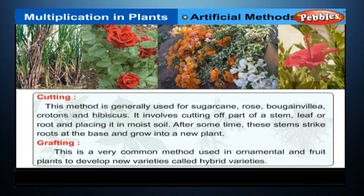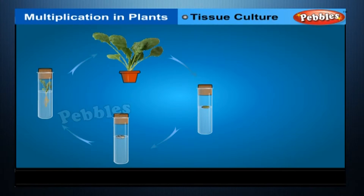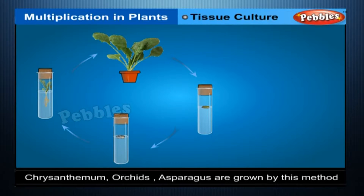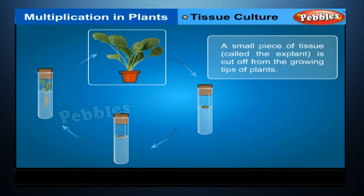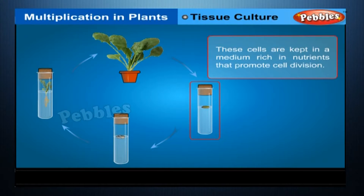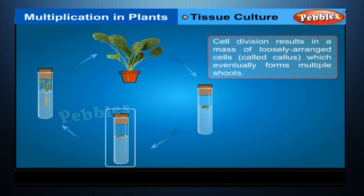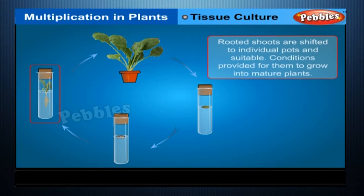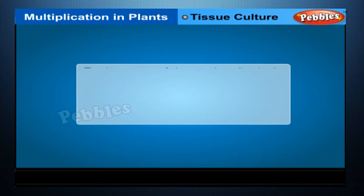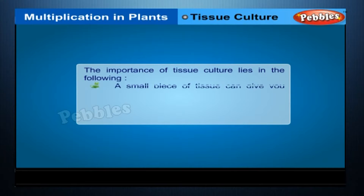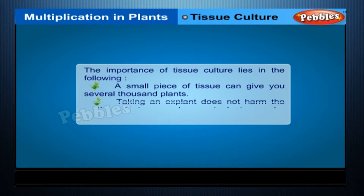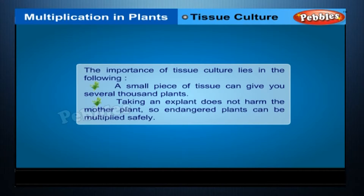Tissue culture: some plants such as chrysanthemum, orchids and asparagus are grown by this method. A small piece of tissue called the explant is cut off from the growing tips of plants. These cells are kept in a medium rich in nutrients that promotes cell division. Cell division results in a mass of loosely arranged cells called callus, which eventually forms multiple shoots. Rooted shoots are shifted to individual pots and suitable conditions are provided for them to grow into mature plants. A small piece of tissue can give several thousand plants, and taking an explant does not harm the mother plant, so endangered plants can be multiplied safely.